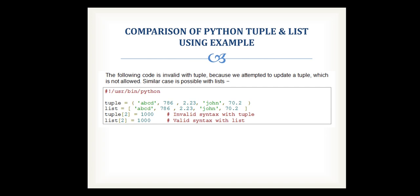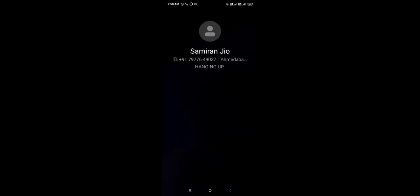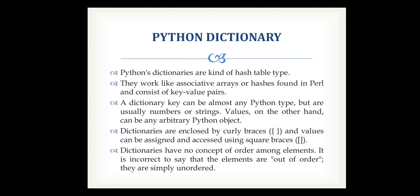When you try to modify a tuple element — for example, setting tuple[2] equals 2000 — it will give an error because tuples cannot be modified. But for a list, modifying an element at index 2 is allowed directly.